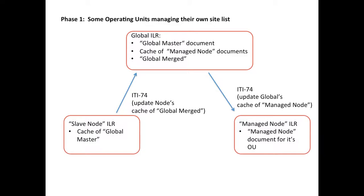Phase one would be the next step, and this is when some of the operating units or implementing partners are managing their own site lists. In this case, we still have a mixed bag. Some of the nodes are going to be slaves to the global interlinked registry — that's on the left-hand side — and on the right-hand side, we see nodes that are managing their own site lists. For each of the managed nodes on the right-hand side, the global interlinked registry can execute an ITI-74 to update its cache of those managed nodes. So there will be a CSD document for each of the operating units or implementing partners' nodes stored in the interlinked registry at the global level.